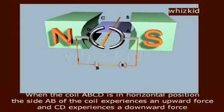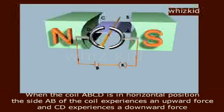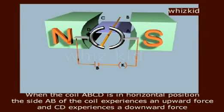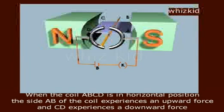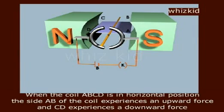Working of electric motor. When the coil ABCD is in horizontal position, the side AB of the coil experiences an upward force and CD experiences a downward force.